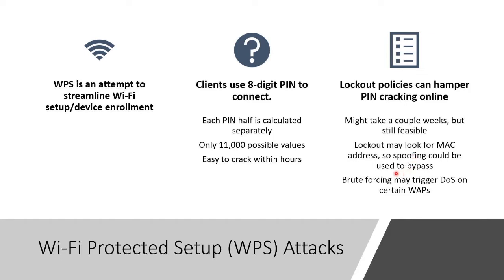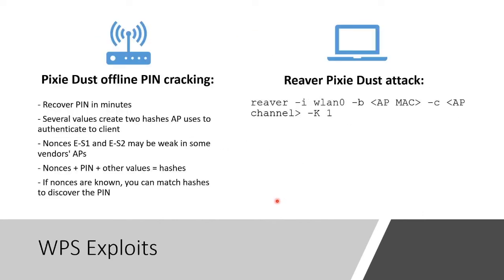The downside is that this kind of brute forcing can trigger a denial of service against cheaper, lower-end WAPs. There are cracking tools against WPS where the PIN can be recovered in minutes. The AP uses two hash values with one-time nonces to authenticate the client. These nonces may be weak in some versions — if the nonce is known (possibly via vendor lookup), the hashes can be matched quickly to discover the PIN. The Reaver Pixie Dust attack, available in Kali Linux, exploits this against WPS-enabled routers.